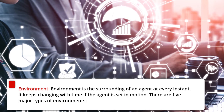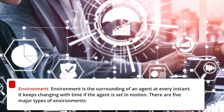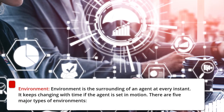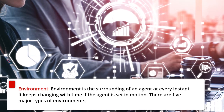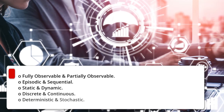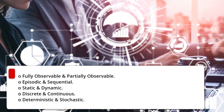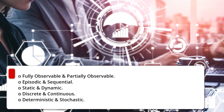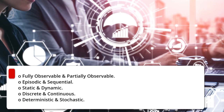Environment is the surrounding of an agent at every instant. It keeps changing with time if the agent is set in motion. There are five major types of environment: fully observable and partially observable, episodic and sequential, static and dynamic, discrete and continuous, and deterministic and stochastic.